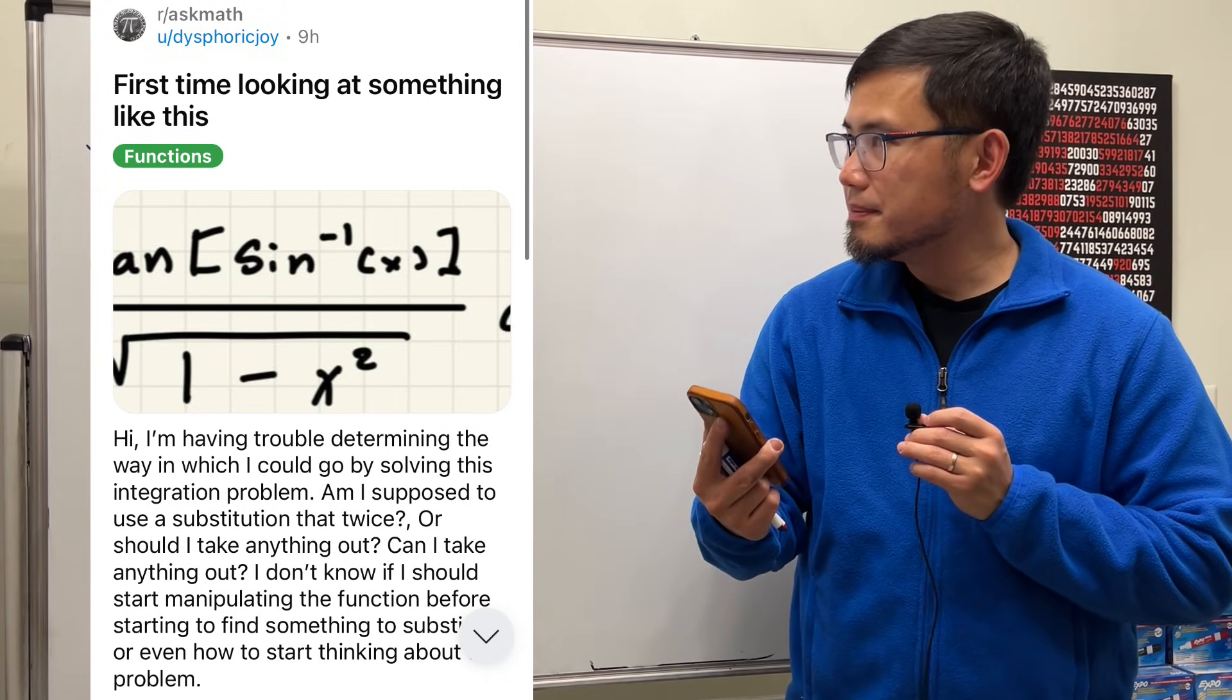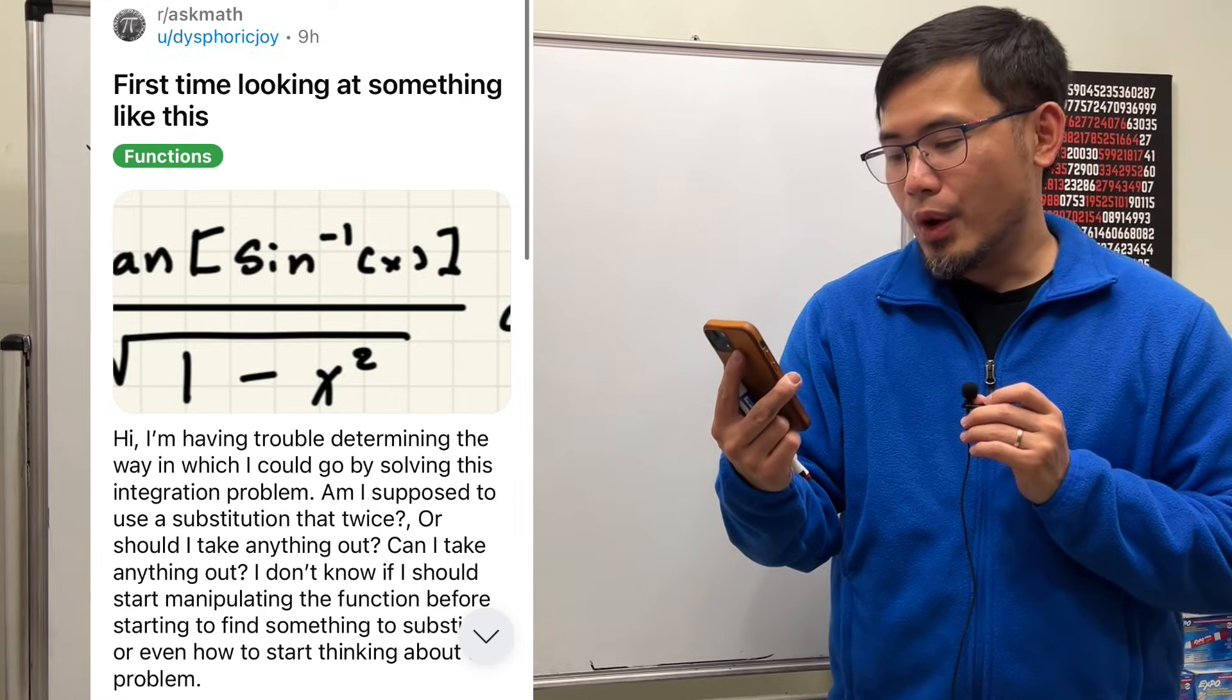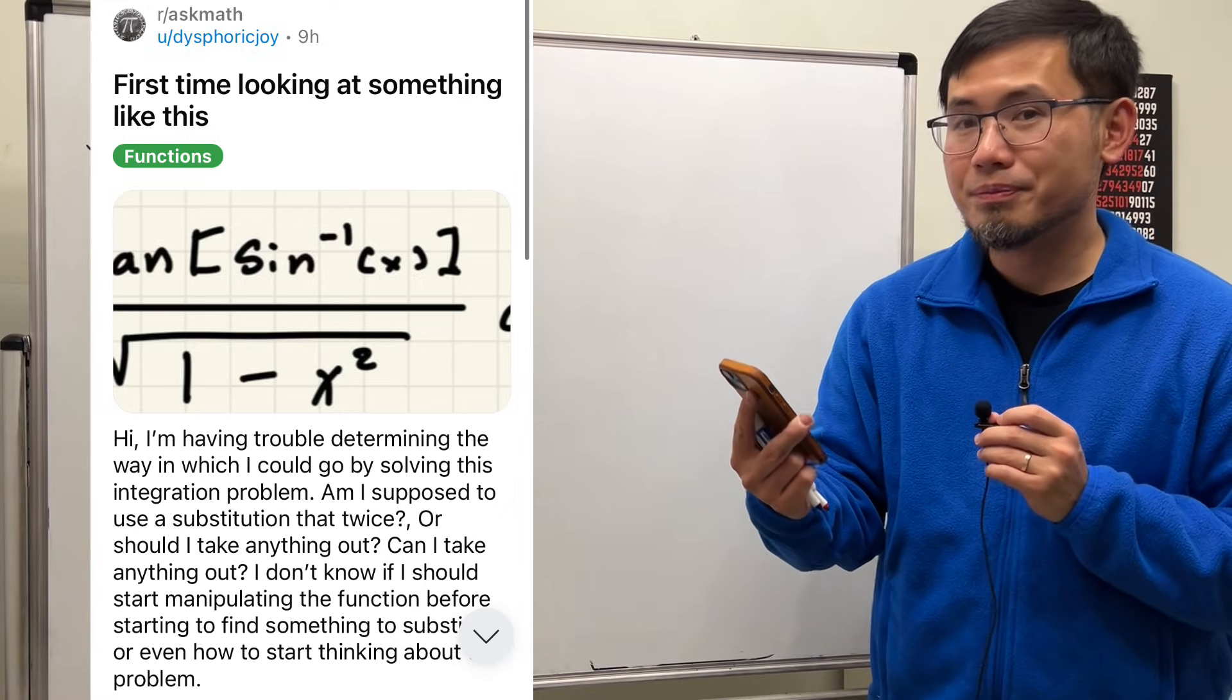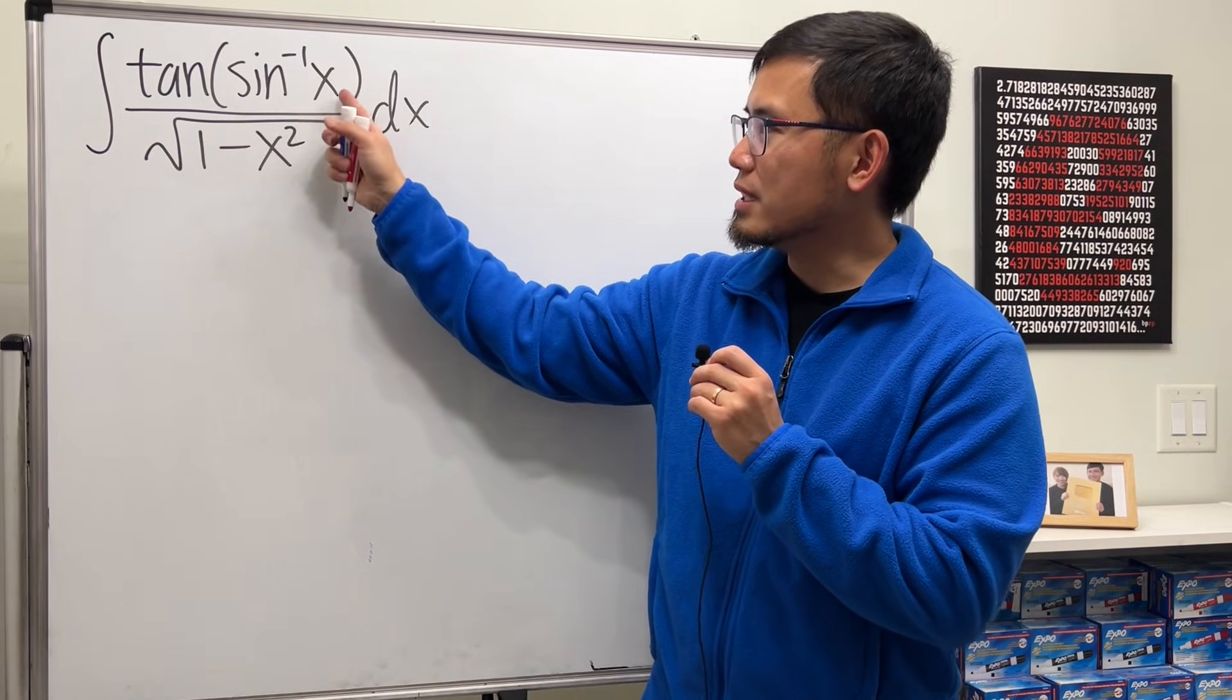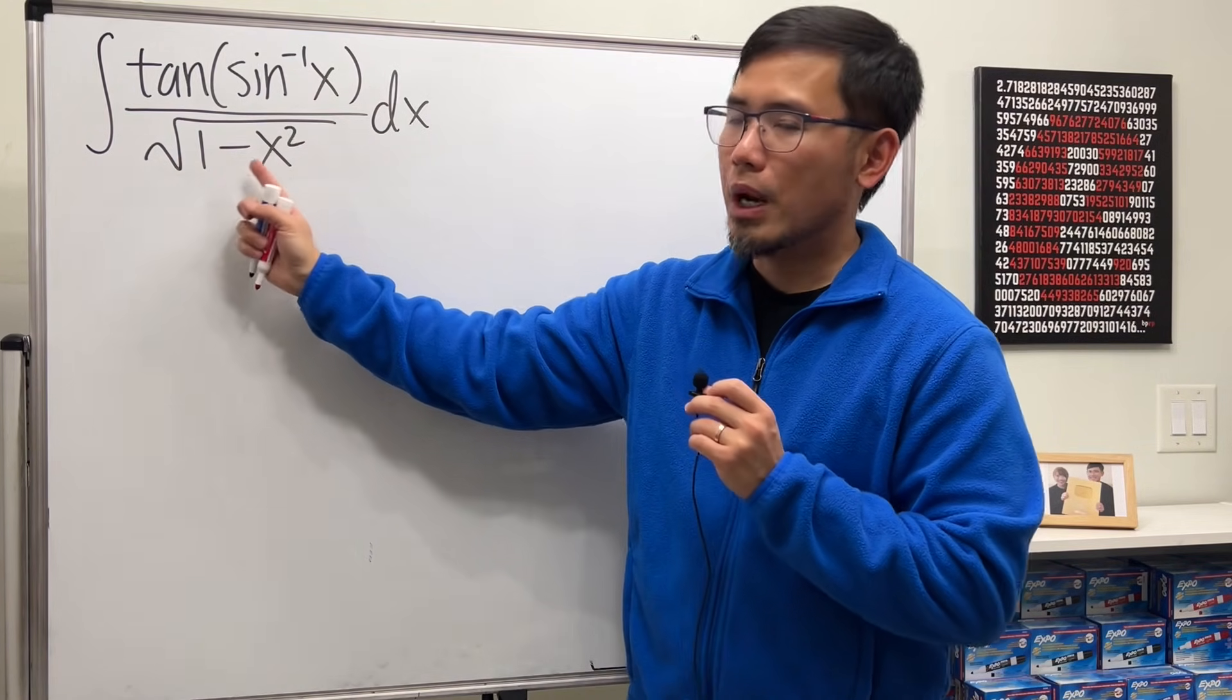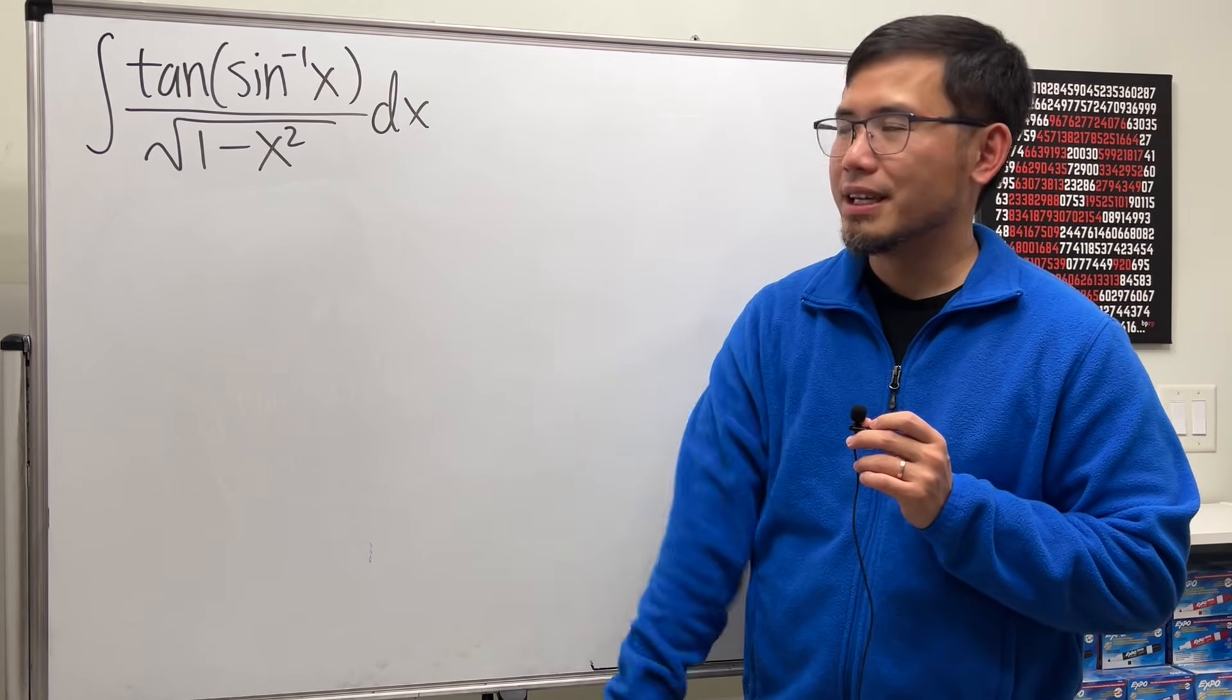First time looking at something like this, am I supposed to do a substitution twice, or should I take anything out? Well, let's have a look. Here we are going to integrate tangent of inverse sine of x over square root of 1 minus x squared. Yes, you can do substitution twice, but it's going to be pretty long.